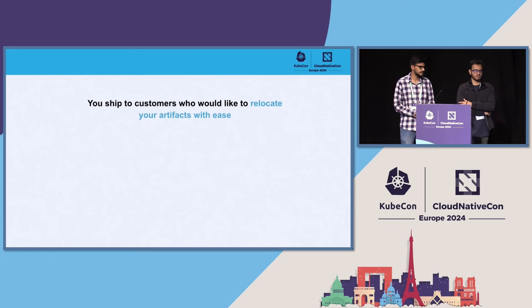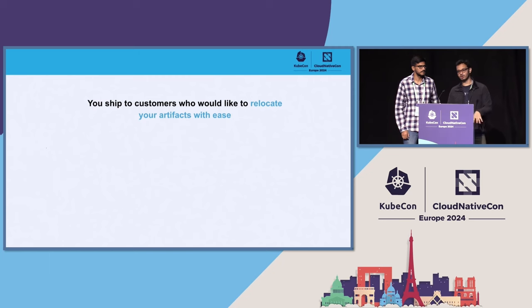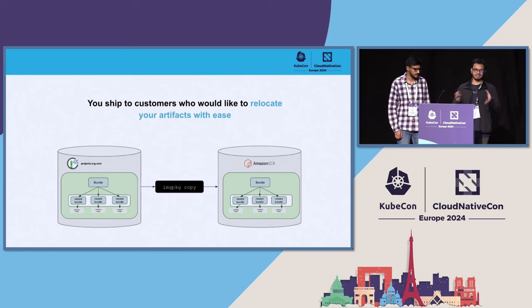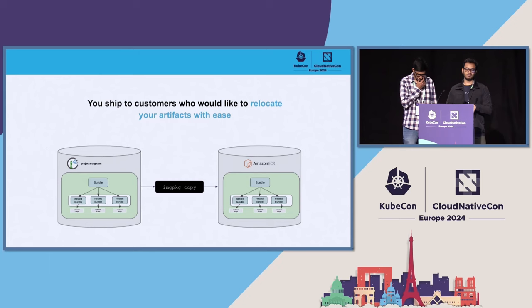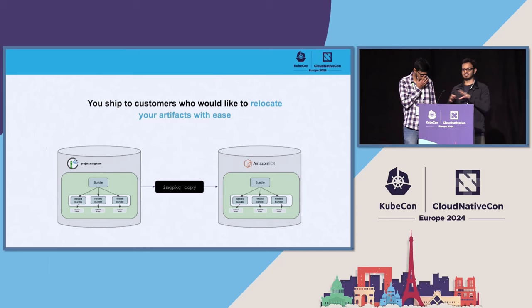Quite often you'll be shipping to customers who are in either highly regulated environments like finance or healthcare, or maybe they're running edge environments where they'd like those environments to be self-reliant. In these cases, you want your customers to easily relocate all the artifacts and configurations they need to their own environment. Carvel has a tool called Image Package. What Image Package does initially is take your configuration and bundle it into an OCI artifact. Additionally, it keeps track of all of your container images, and when you relocate this bundled configuration, it picks up the container images referred to in that configuration and also moves them to the new registry — that's your customer's environment.